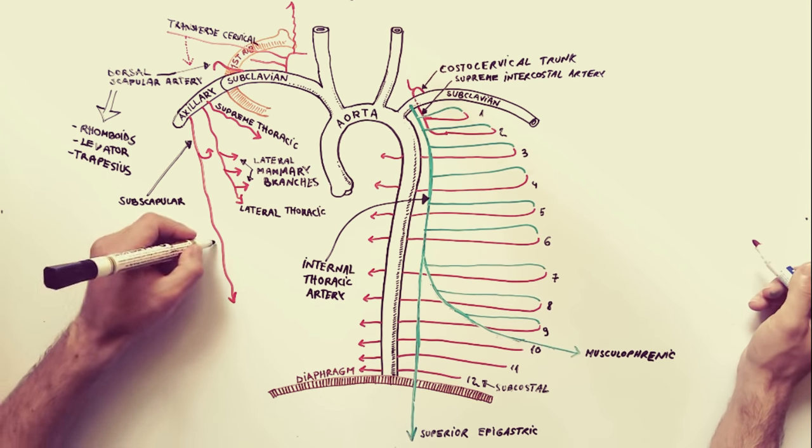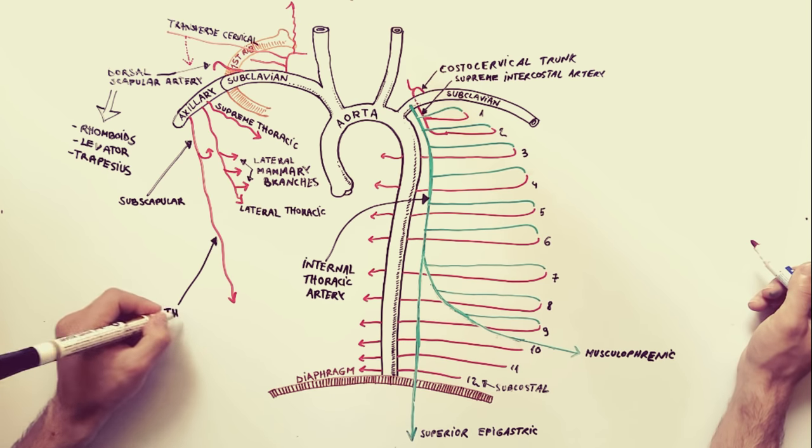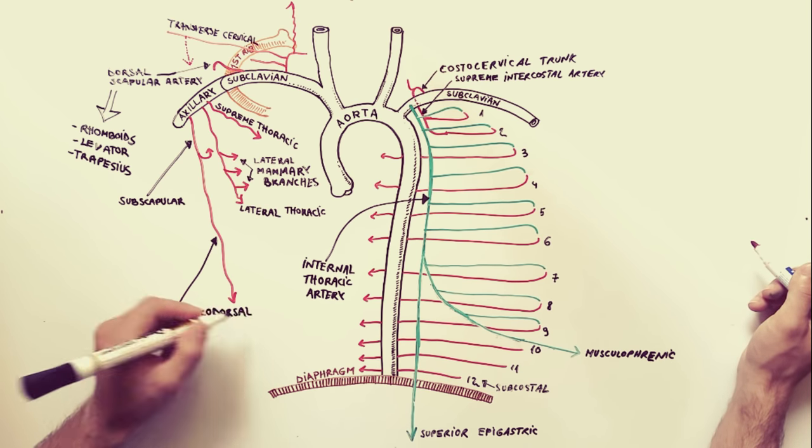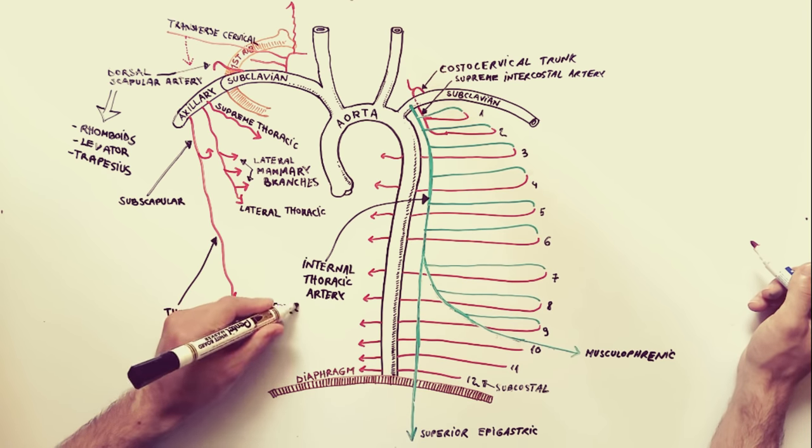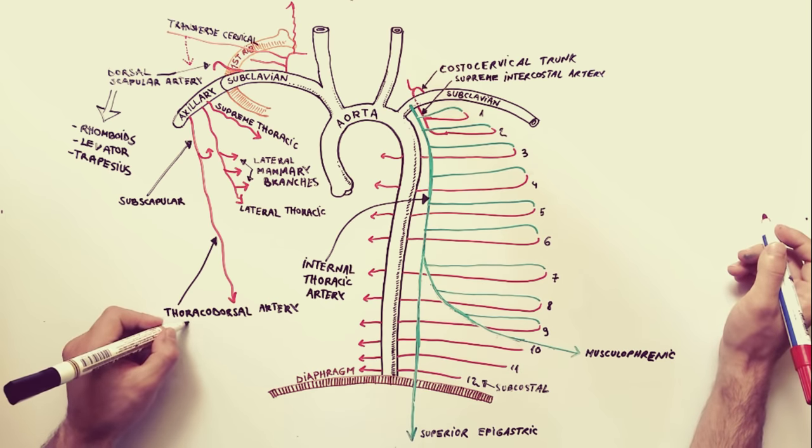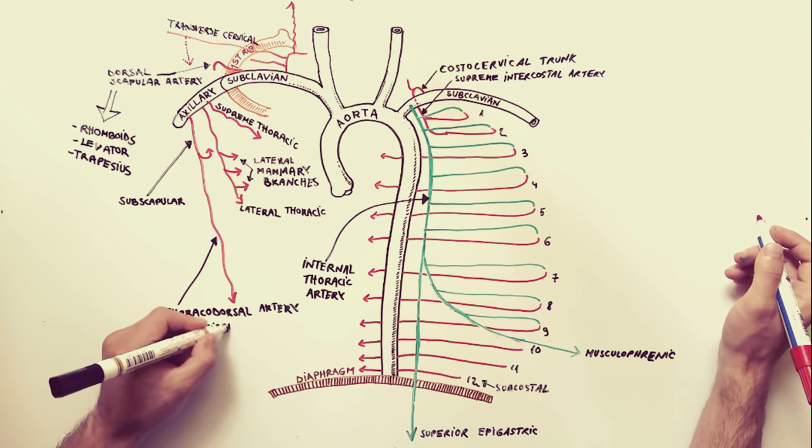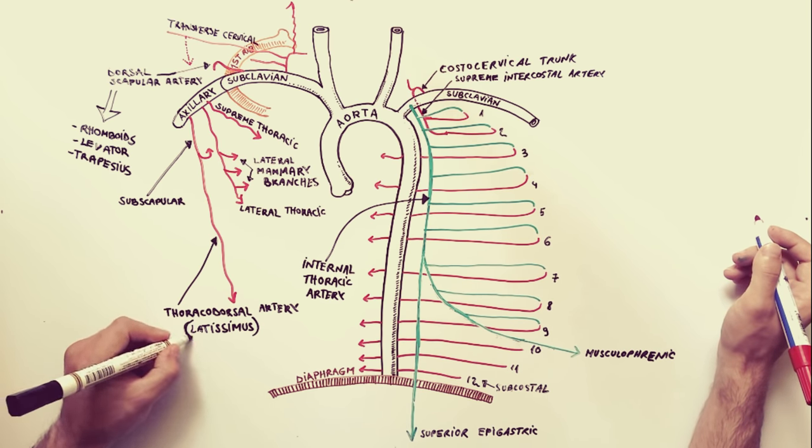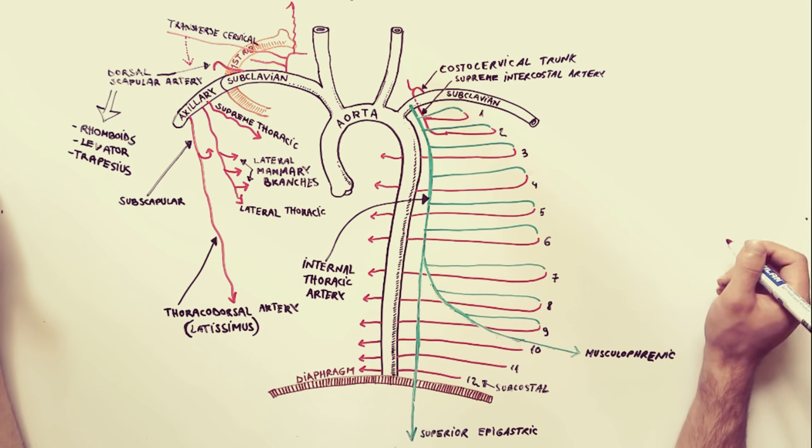Lastly to be discussed is the subscapular artery. The subscapular artery arises from the third part of the axillary artery and after it gives off the circumflex scapular artery, it becomes continuous with the thoracodorsal artery. This artery mainly supplies the latissimus dorsi muscle.